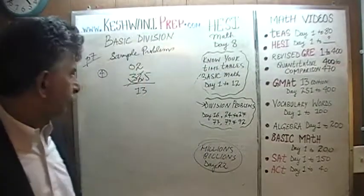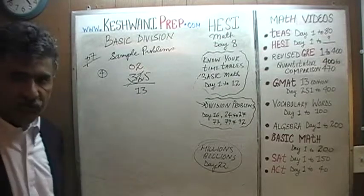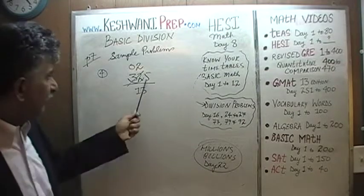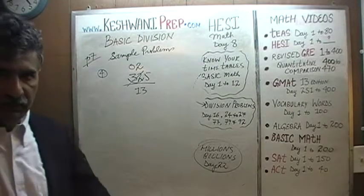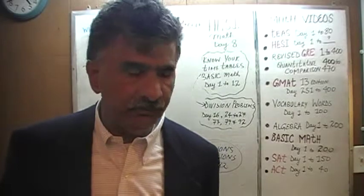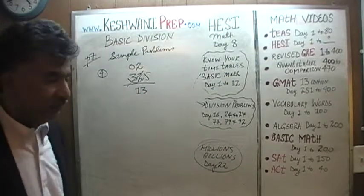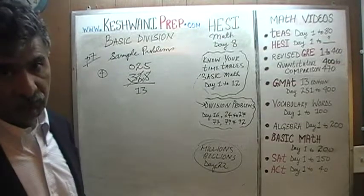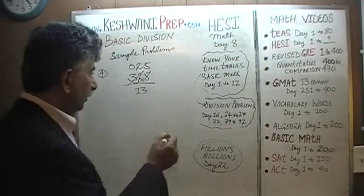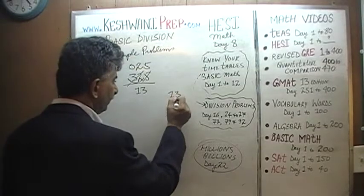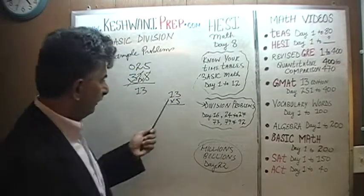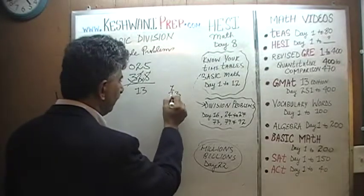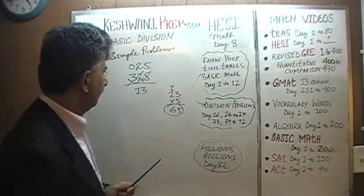The 6 goes and joins the 5, becoming 65. And 65 has 5 thirteens. How do we know that? Because we just know our tables. Or, if you like, you can work it out: 13 times 5 — 5 times 3 is 15, carry 1; 5 times 1 is 5, plus 1 is 6. So 13 times 5 is 65. The answer is 25.